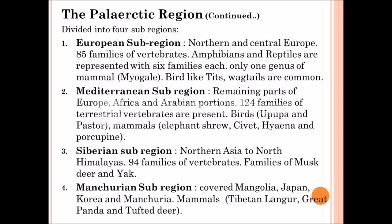In the European sub-region, it includes Northern and Central Europe. It contains about 85 families of vertebrates. Amphibia and reptiles are represented with six families each. It contains only one mammalian family called Mayugele, and birds like tits and red tails are common in this region. The second one is the Mediterranean sub-region. It includes remaining parts of Europe, Africa, and Arabian portions. It contains about 124 families of terrestrial vertebrates. Birds like Hoopoe and Passer are found, and mammals like elephant, and porcupine are present.